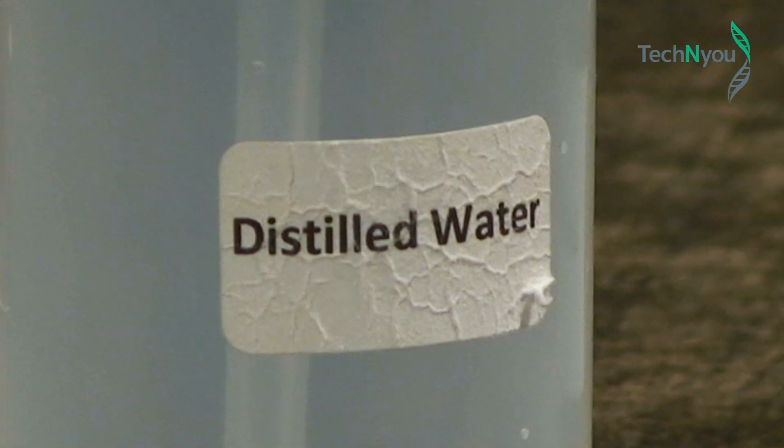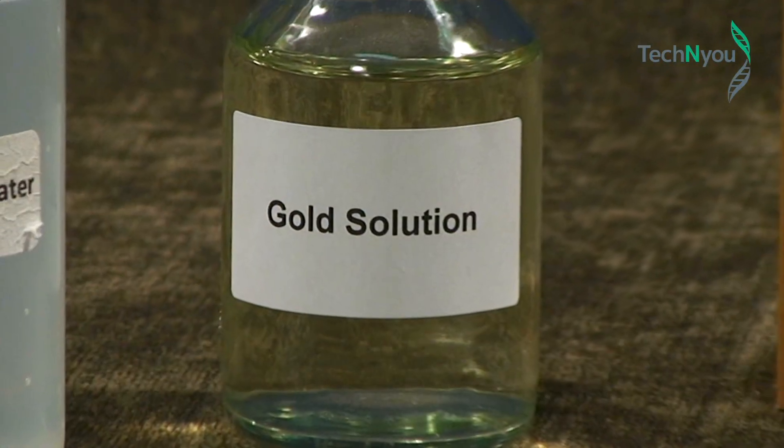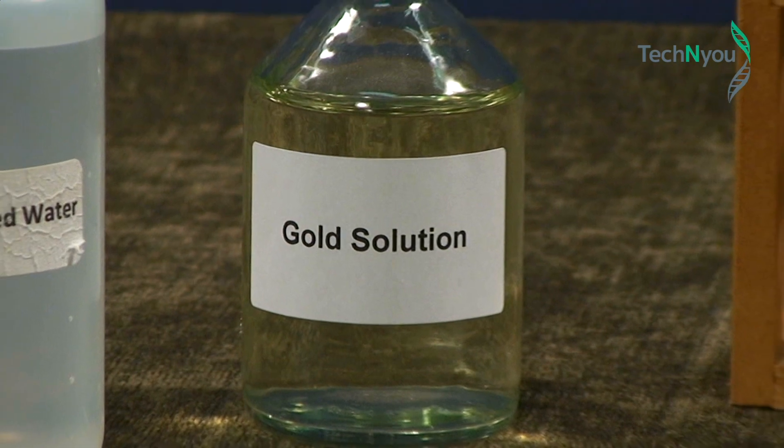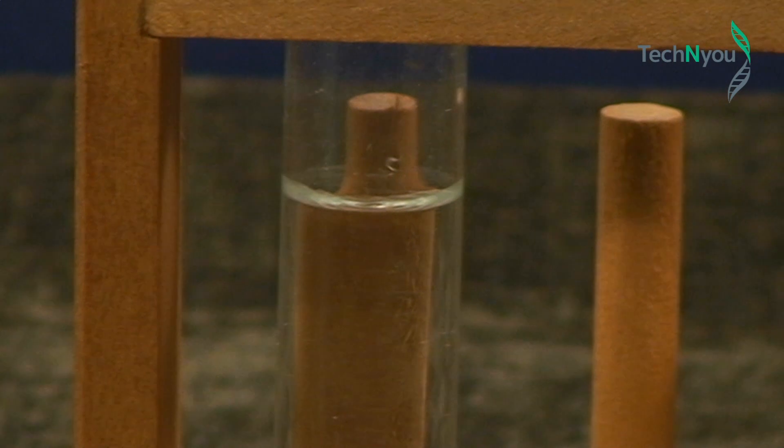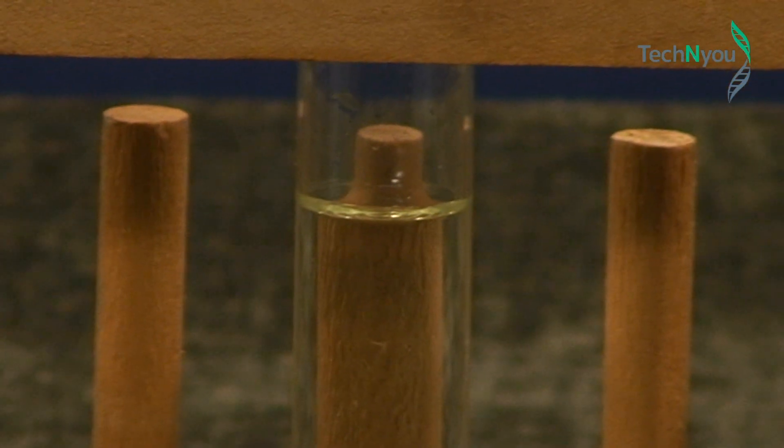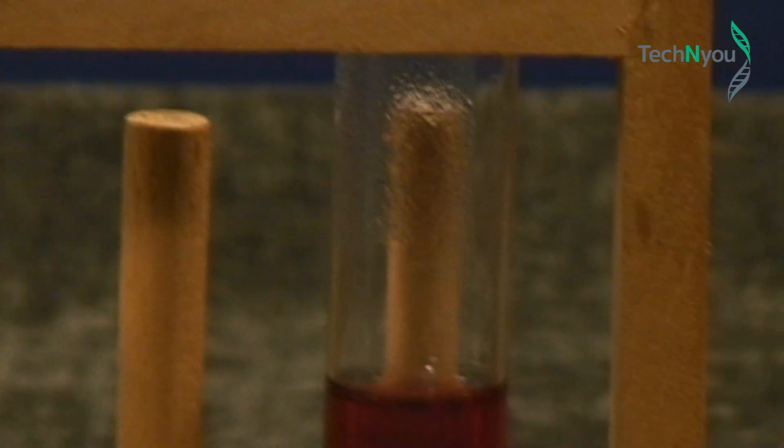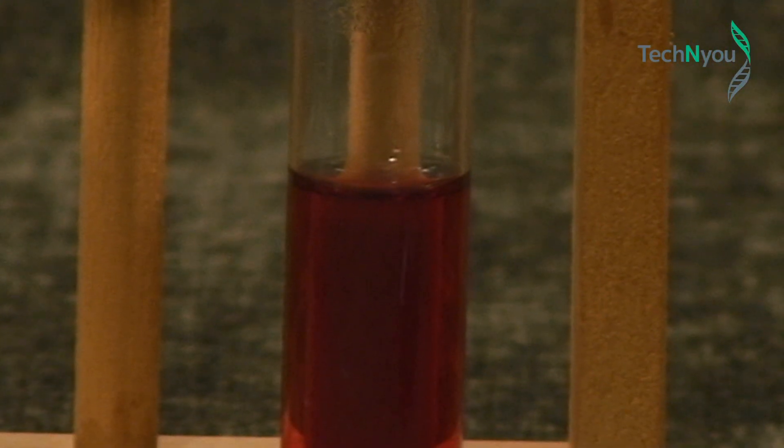Pour distilled water and gold chloride solution into two other test tubes. So, our solutions are distilled water on the left, gold solution, our original solution, and nanoparticles of gold on the right.